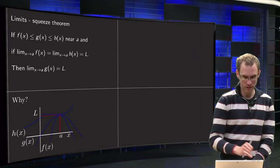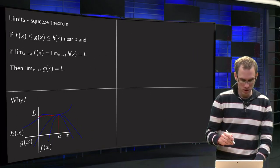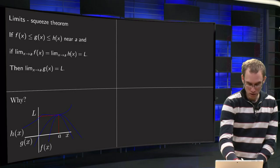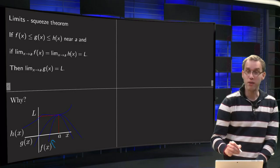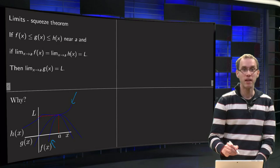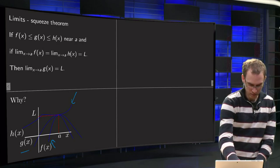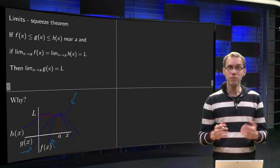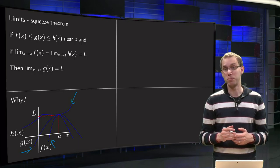So how does that look graphically? So why is that true? So we have our f, the lowest curve over here, we have our h, our highest curve over there, and g over here in between. So what happens if x approaches a?